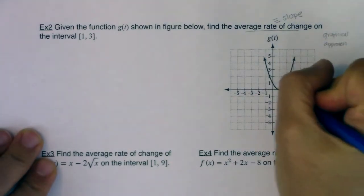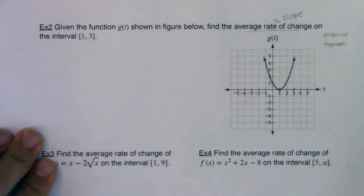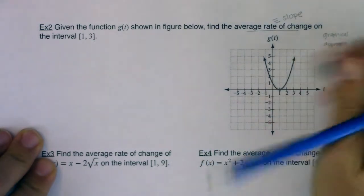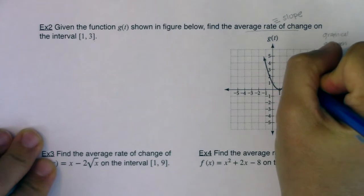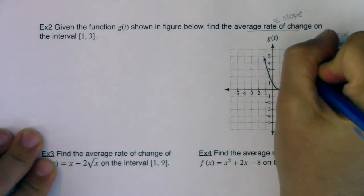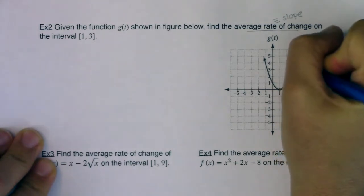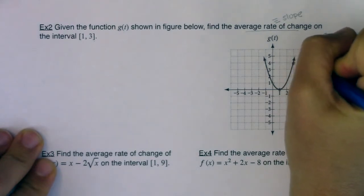So if we take a look at this, I need to look at t equaling 1 and then t equaling 3. Now at 3, it looks like the function is valued up at, I'm going to say that looks to be about 4. I think it's hitting on that grid mark. So this is 3, 4.